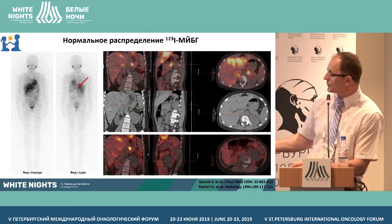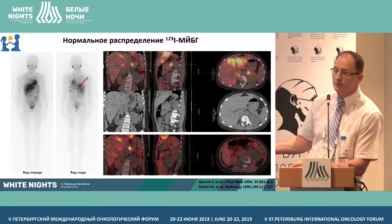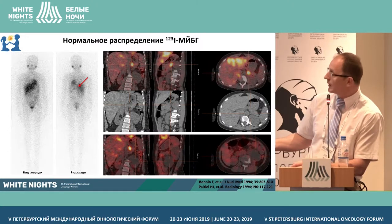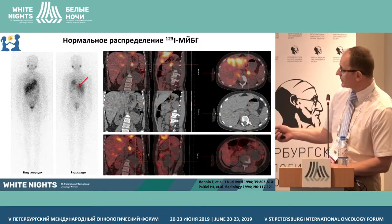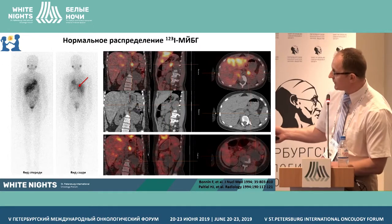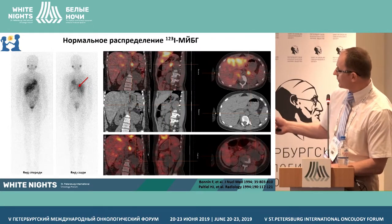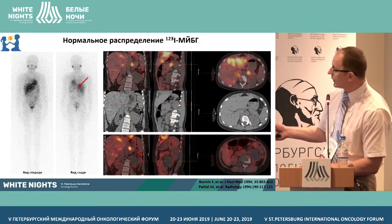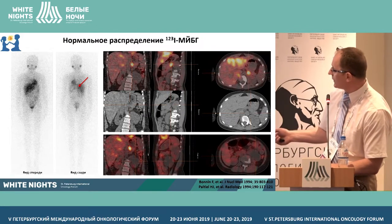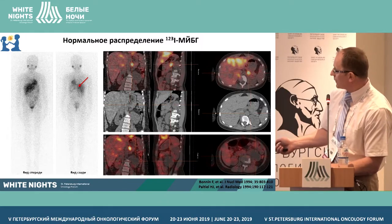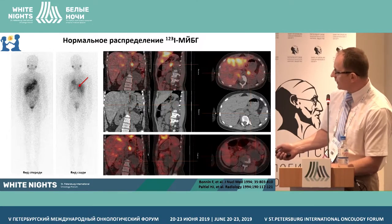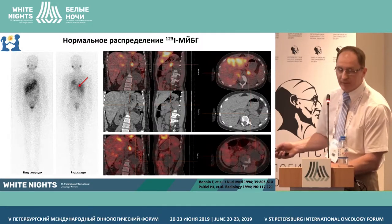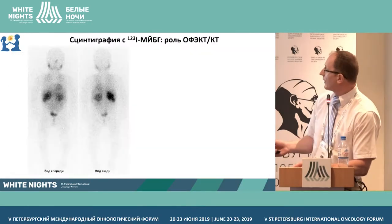These are planar images of the next patient. We know that there is a tumor in the retroperitoneum on the left. We see uptake on the left, but on SPECT/CT we see that the uptake on the left is nothing else but normal physiological uptake in the left adrenal gland, which is unchanged based on CT. The tumor is located lower, at the level of the lower pole of the left kidney, and it is MIBG-negative.